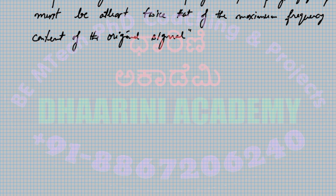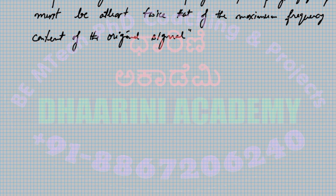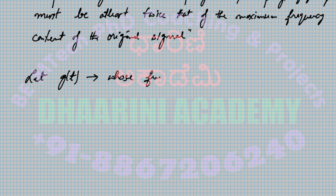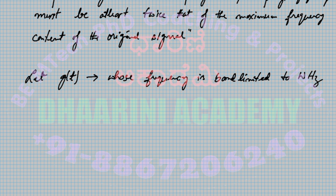Let us consider a signal g(t), which is a signal whose frequency is band-limited to W hertz — meaning the highest frequency content is W hertz.